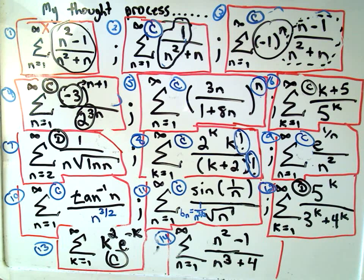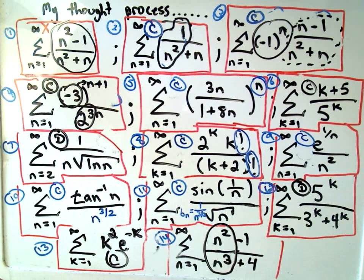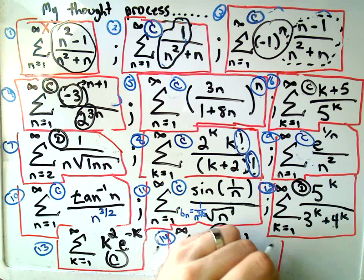And number 14, last but not least, we've got n squared minus 1 over n cubed plus 4. And in this one, kind of the same trick that I did earlier. If you take n squared over n cubed and simplify that, you're going to be left with 1 over n, which is going to be a divergent p-series. And I think if you use the limit comparison test with 1 over n, you can actually show that the series diverges. You may also be able to use the direct comparison test as well. So again, I think two different ways, but in both cases, you would show that this one diverges.